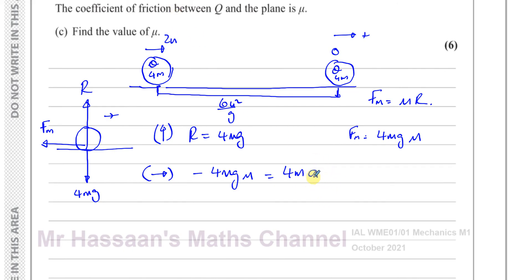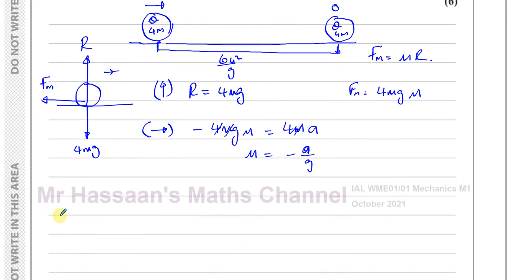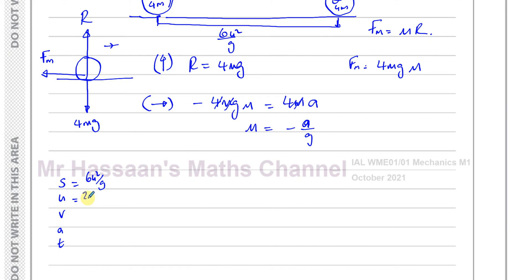The 4m cancels, leaving −gμ = a, so μ = −a/g. If we find the acceleration, we can find μ. We use SUVAT because this is constant acceleration. We know: initial velocity u = 2u (positive), final velocity v = 0 (comes to rest), distance s = 6u²/g. We don't need time, so we use v² = u² + 2as.